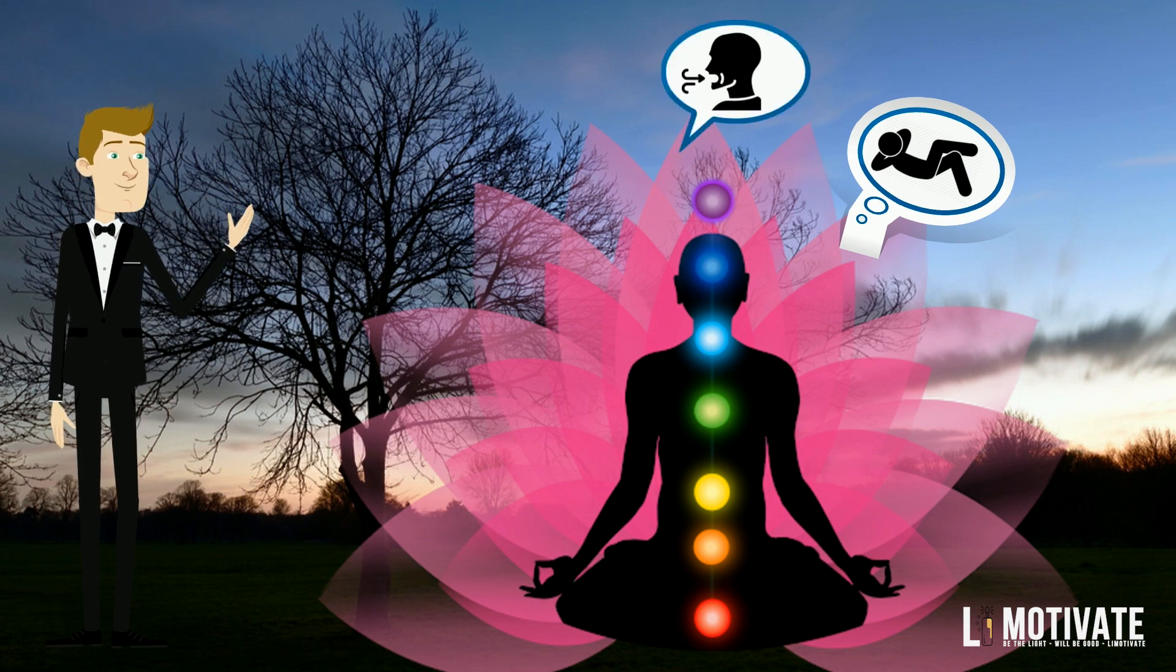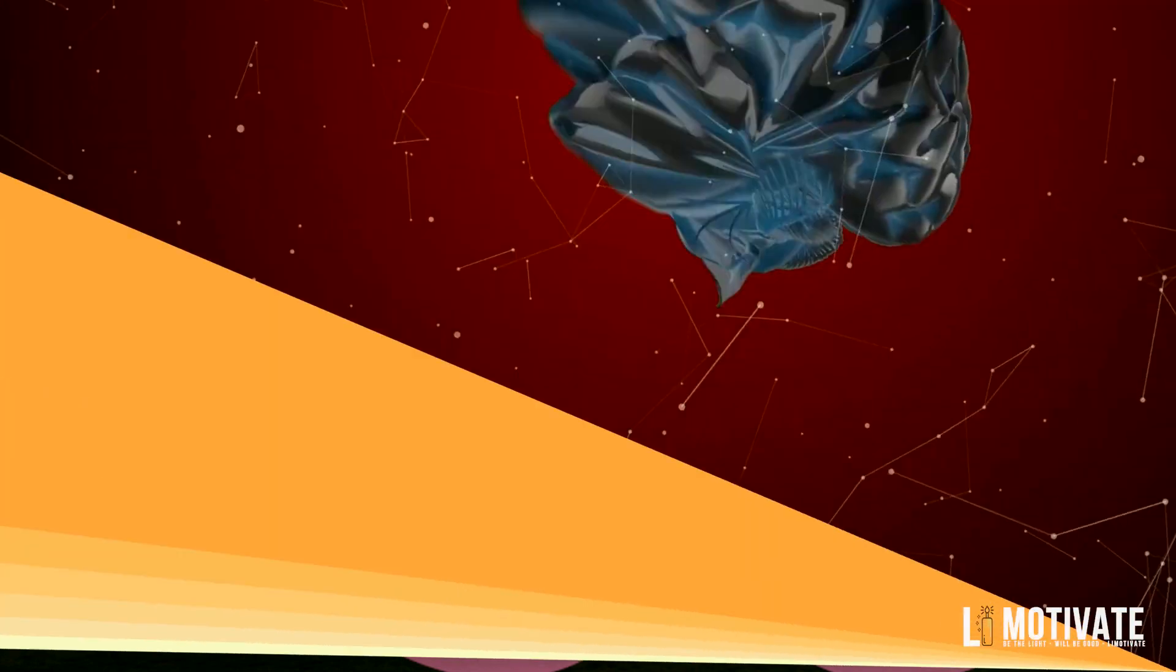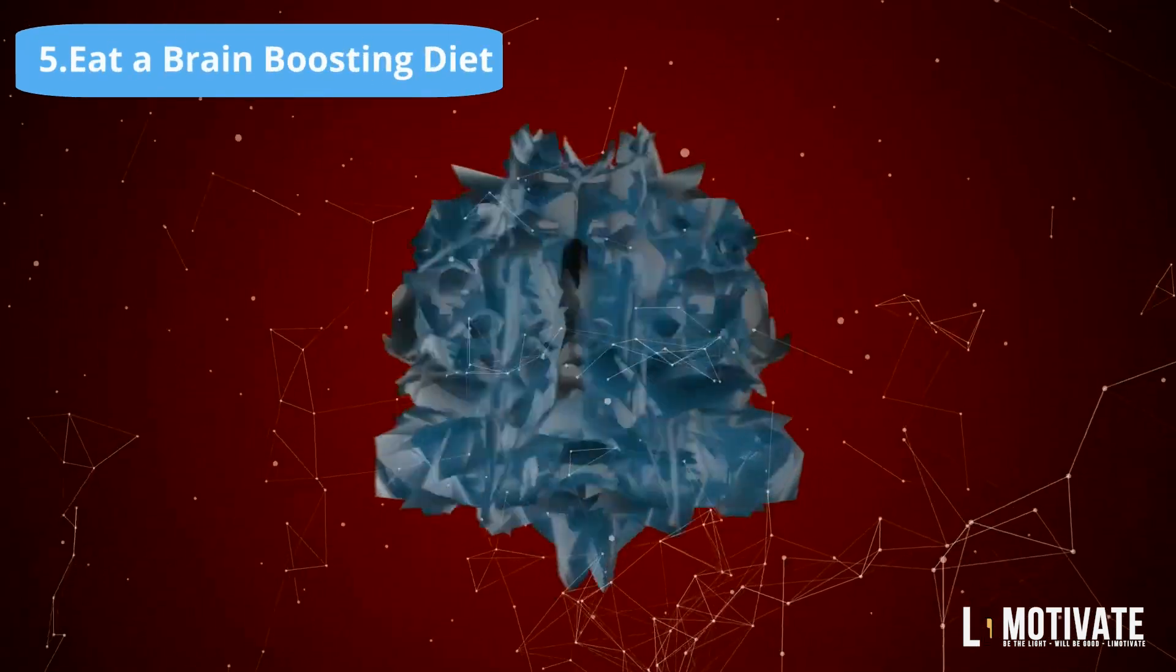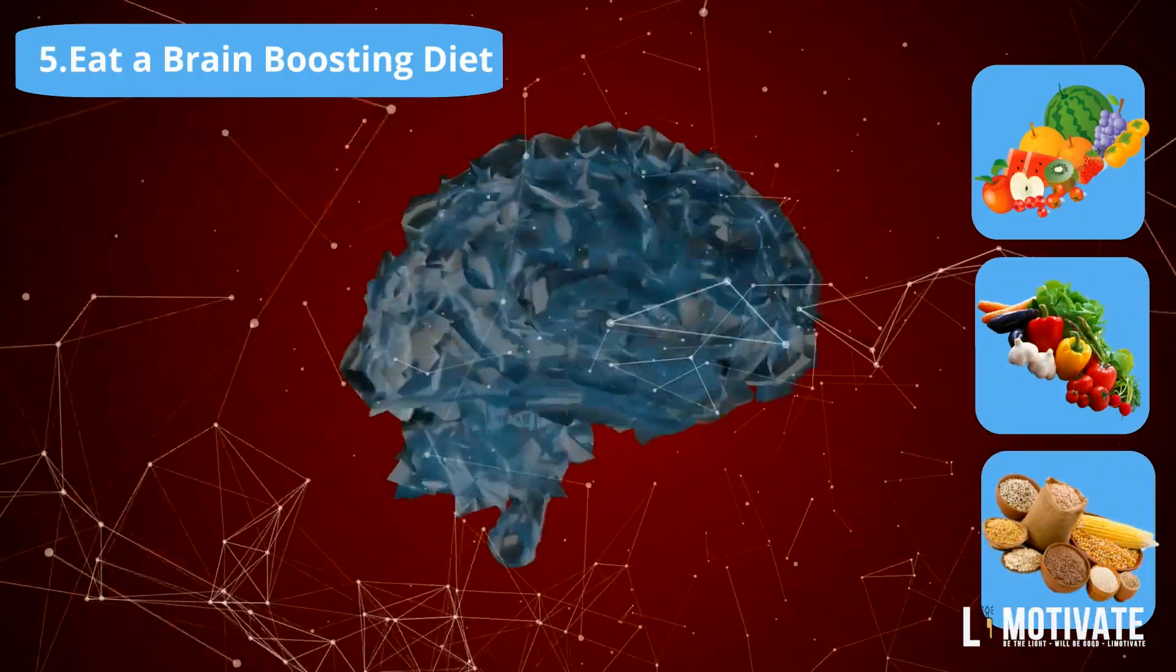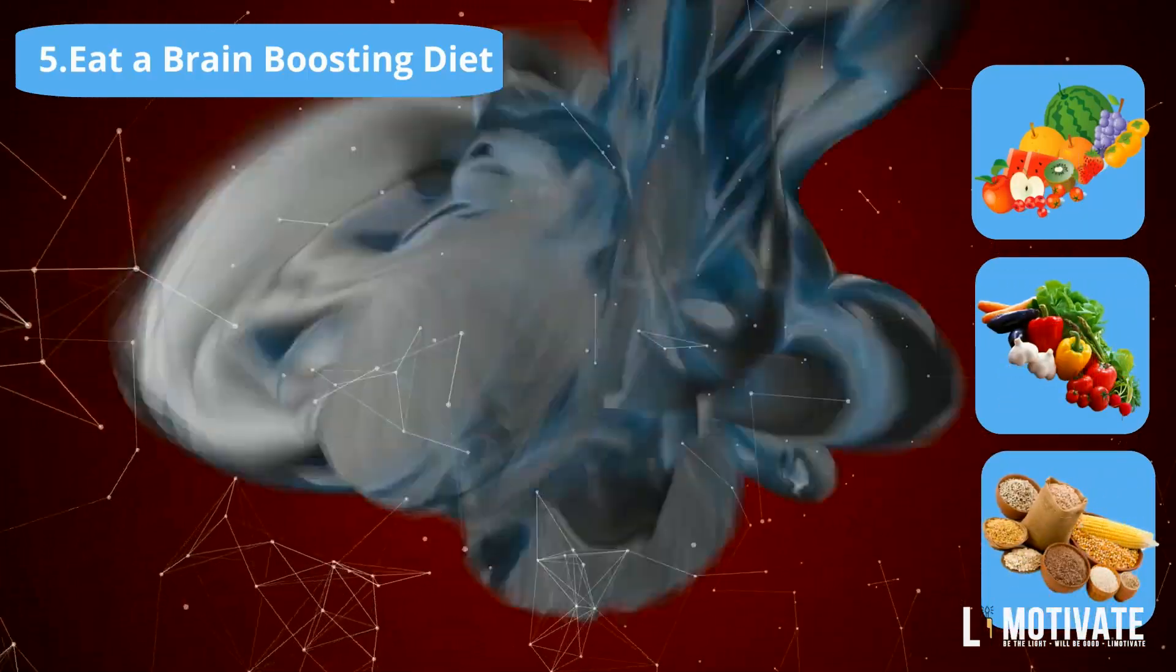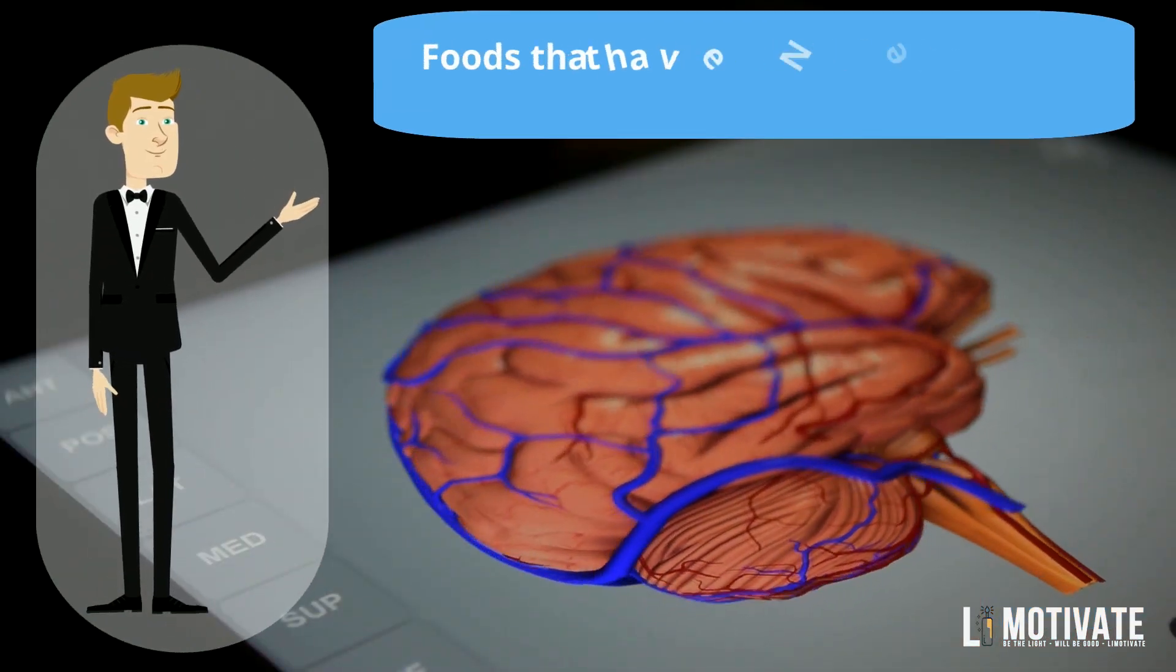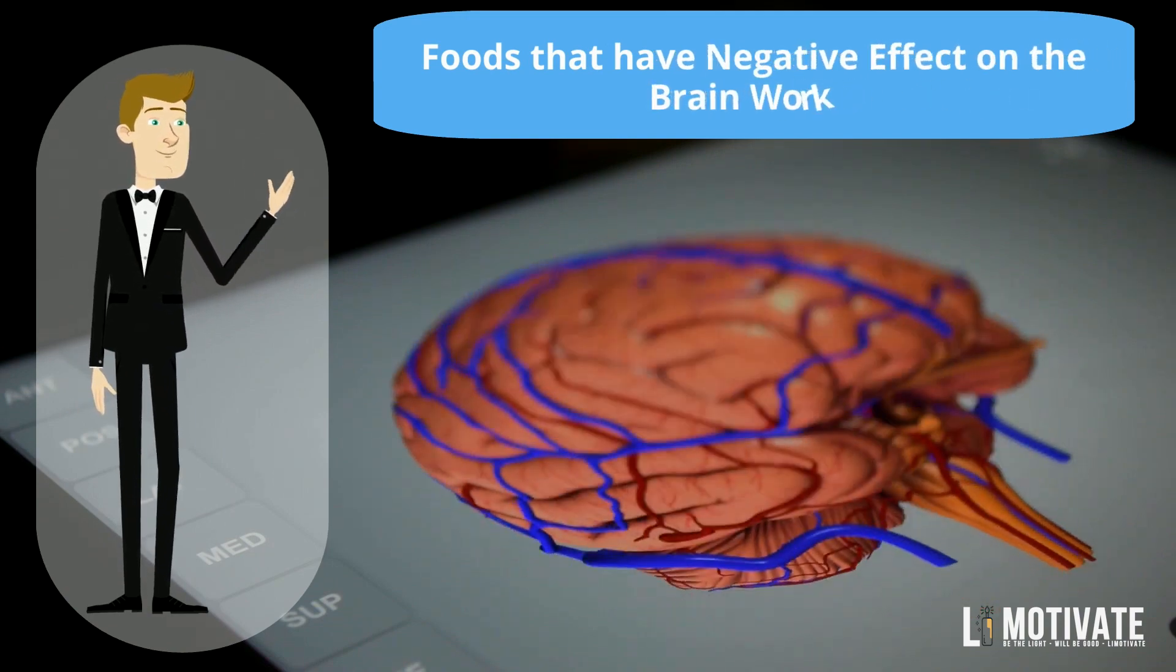Number five: Eat a brain-boosting diet. A diet based on fruits, veggies, whole grains, healthy fats, and lean products acts like fuel to the brain. But there are also foods that have negative effects on how the brain works, so we should know what to avoid also.